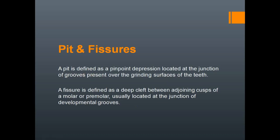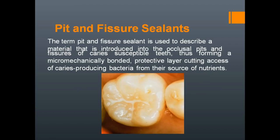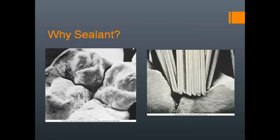Pit and fissure sealants are materials introduced into the pits and fissures of caries-susceptible teeth, forming a micro-mechanically bonded protective layer that cuts the access of caries-producing bacteria from their source of nutrients. Nutrients such as sucrose tend to collect in these deep pits and fissures. Once we seal off this area, bacteria will not get their substrate. Only when bacteria act upon the substrate is acid produced, and ultimately caries will happen. The rationale behind pit and fissure sealants is to cut off the nutrient supply to bacteria.